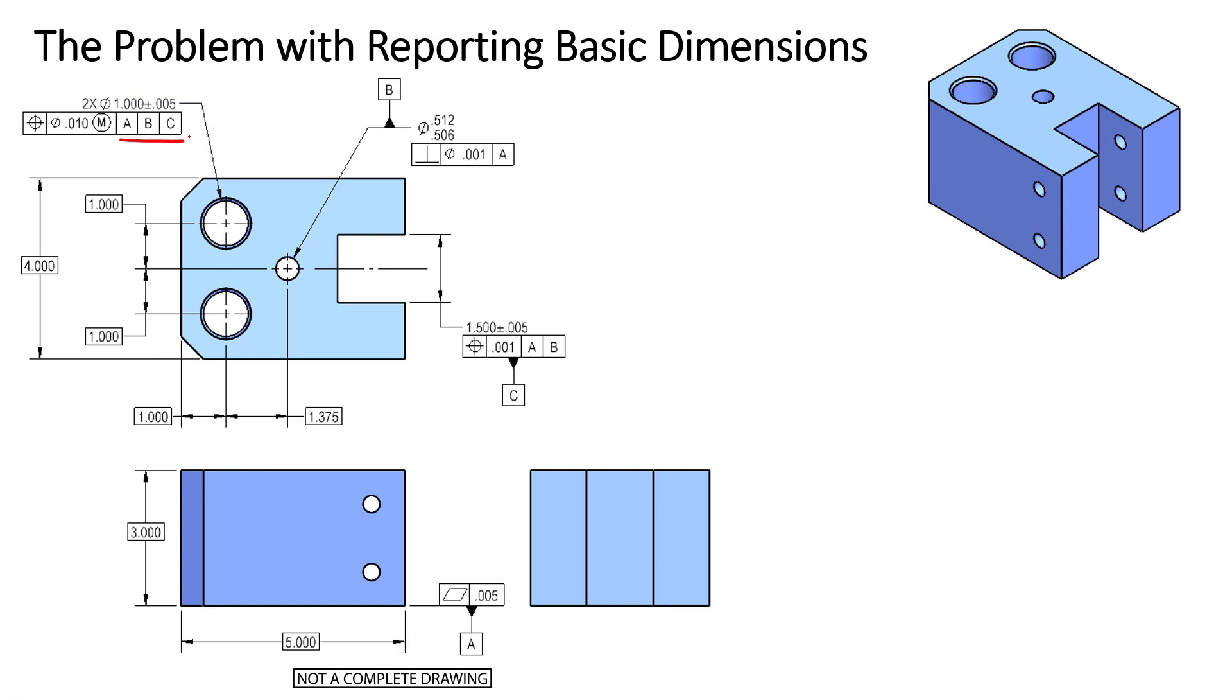So let's start with datum reference A. The datum feature A is going to be this surface right here, which in this view is also this surface. We know that a plane can lock down three degrees of freedom: two rotations and one translation.